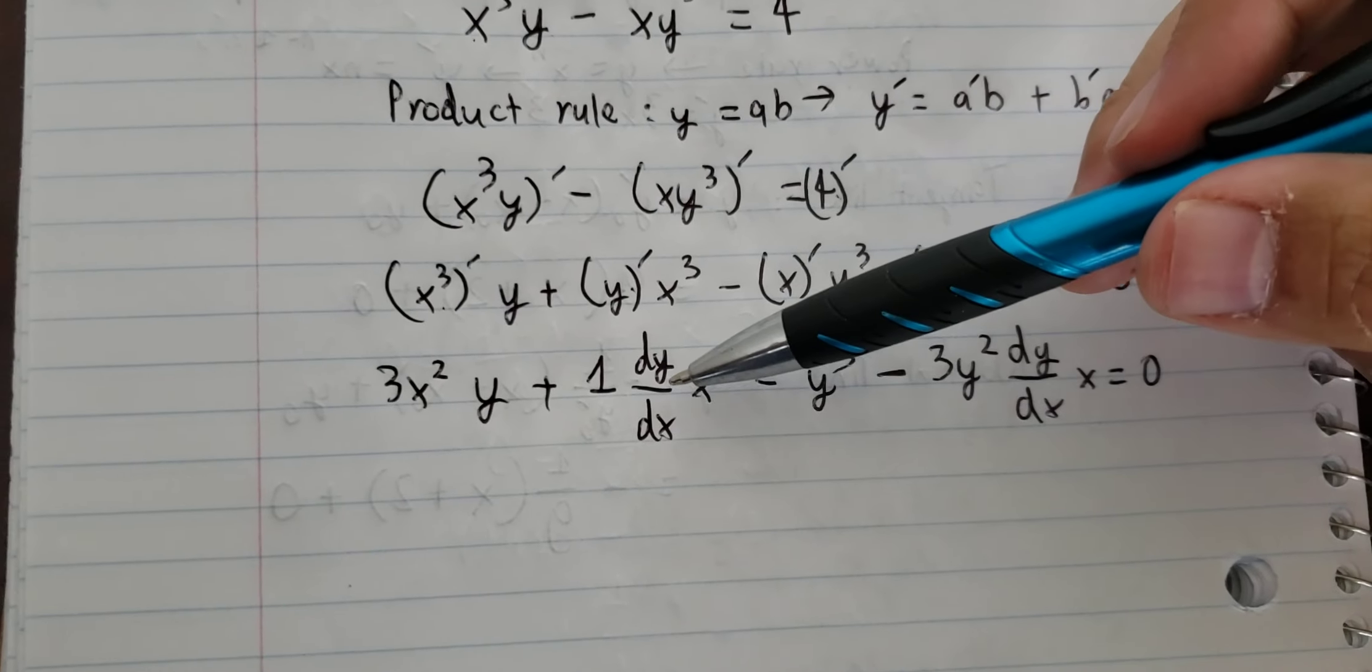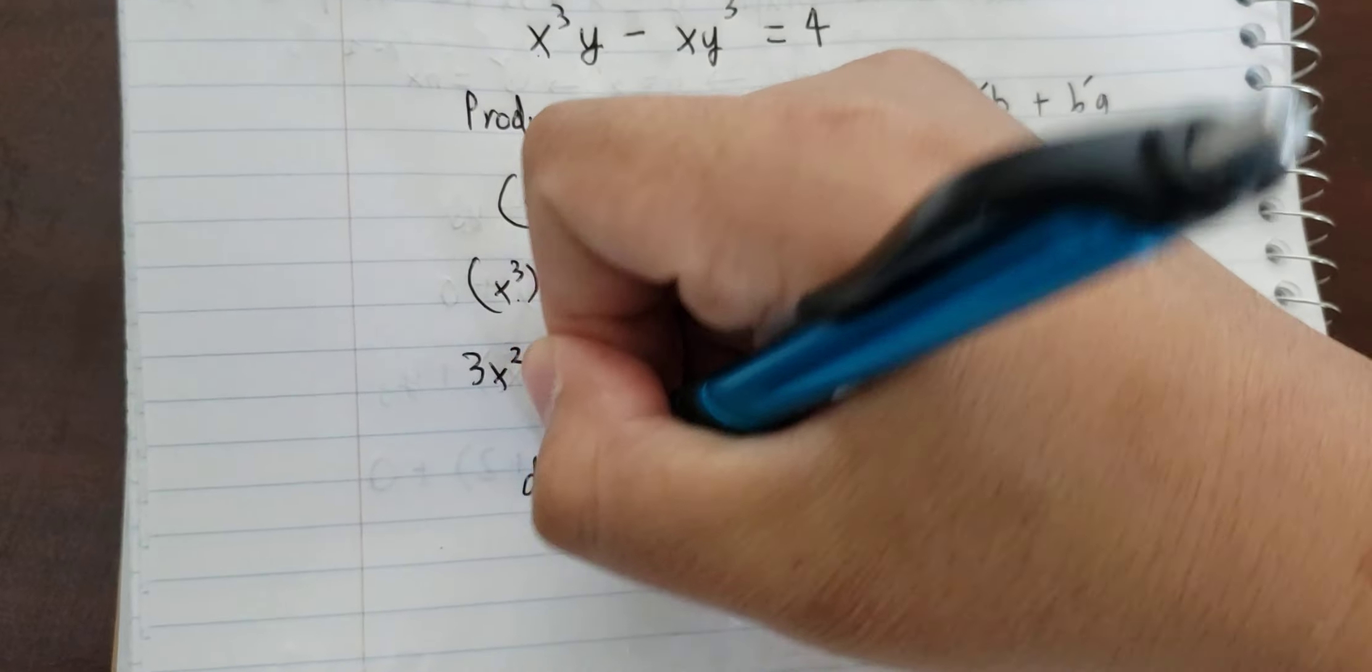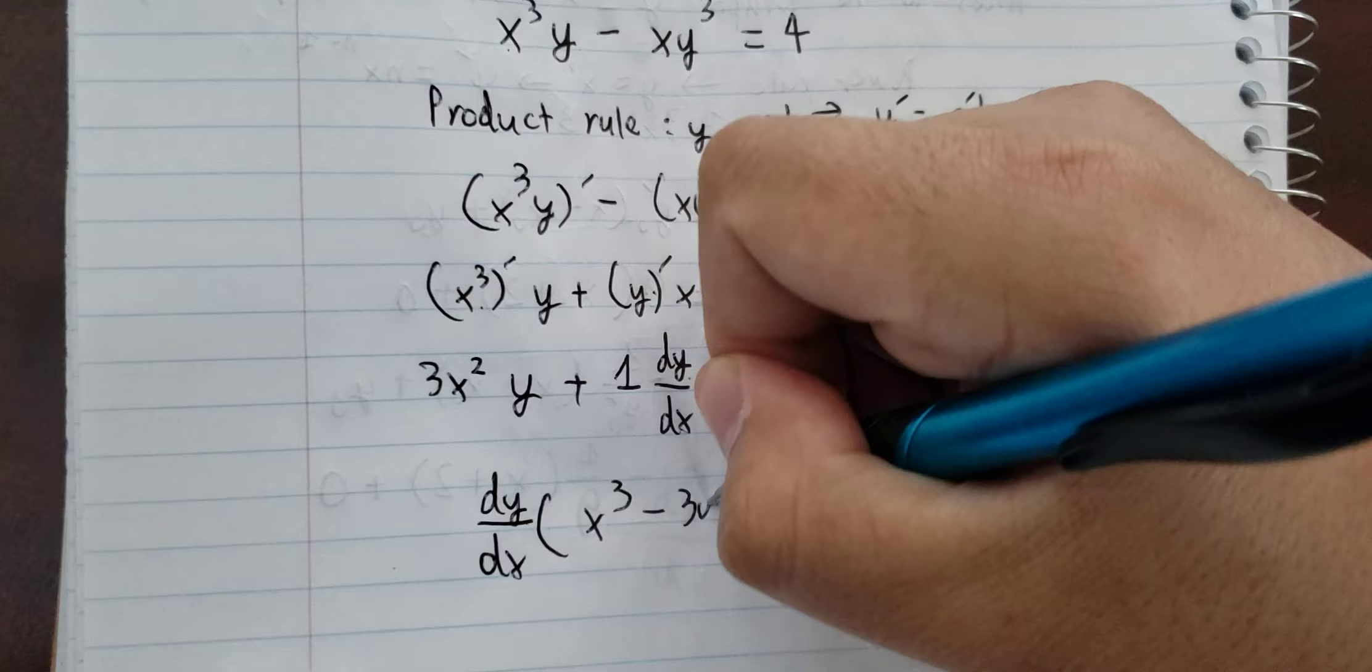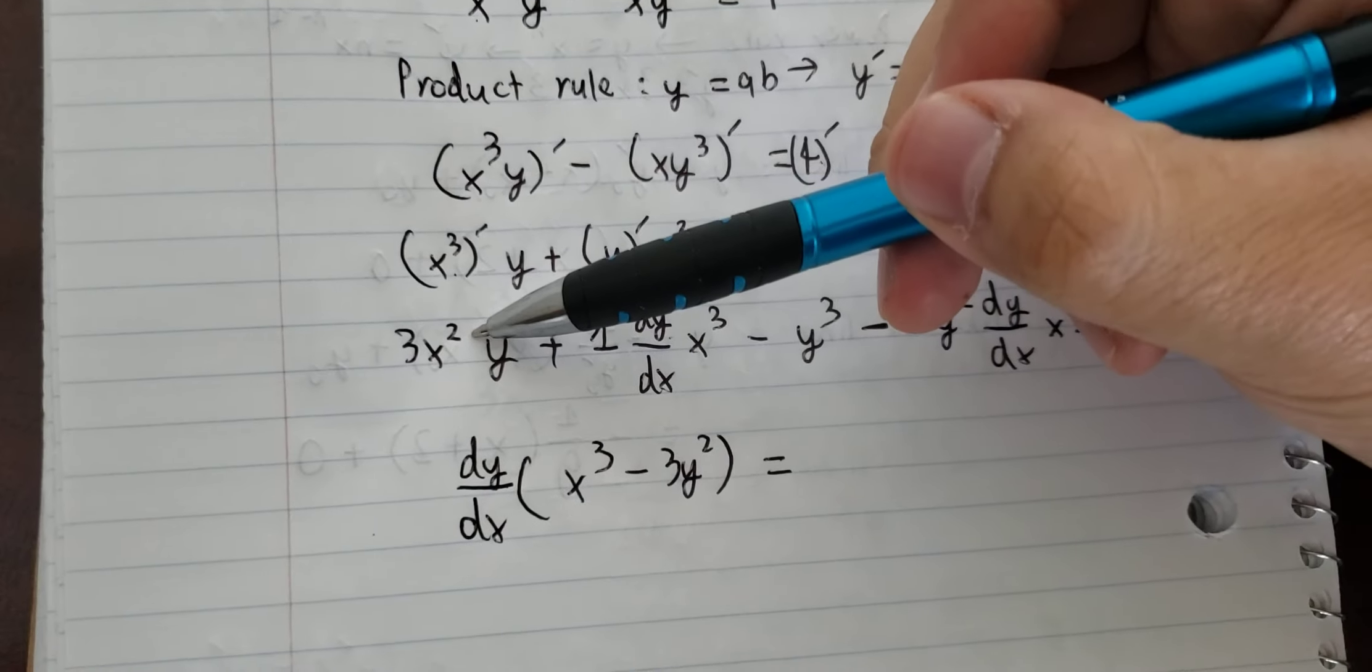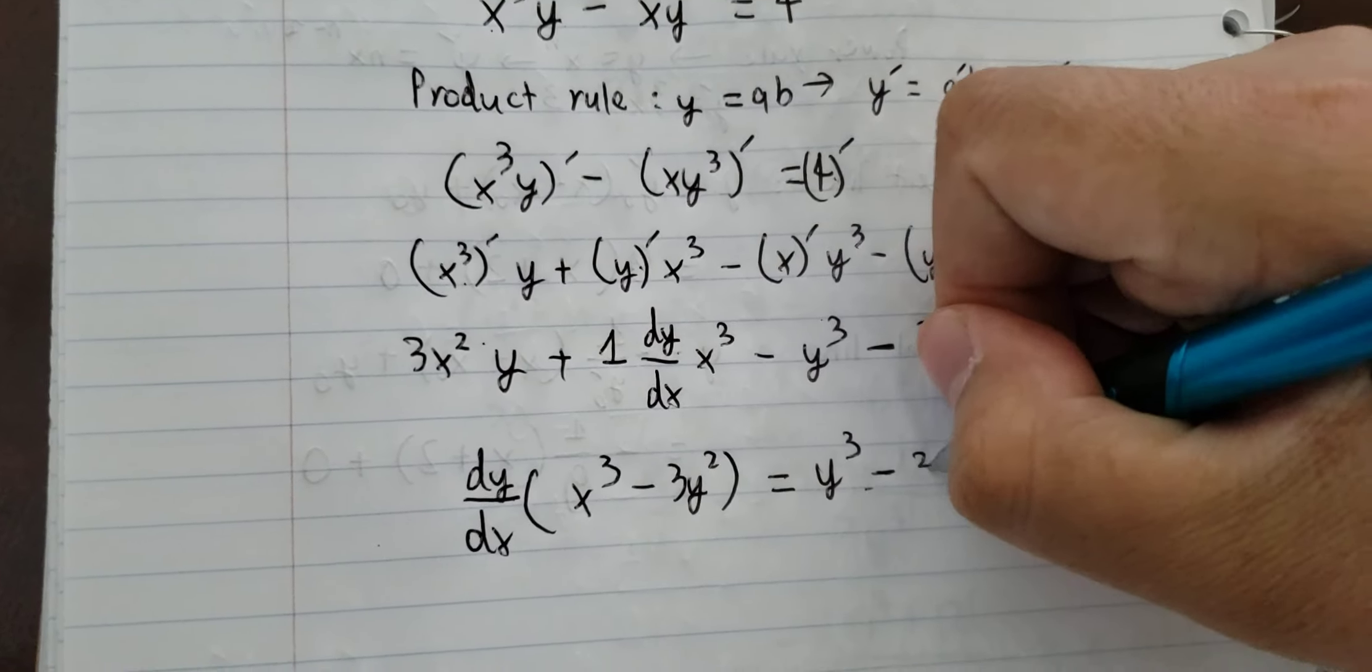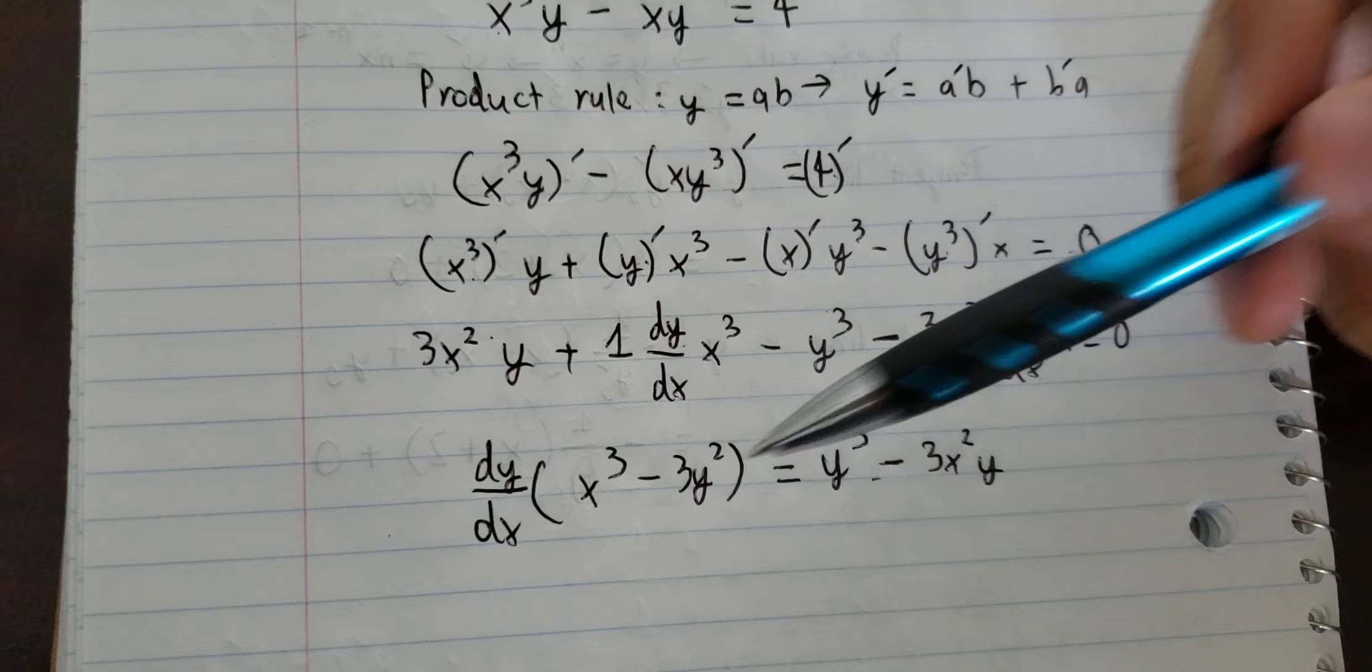Now we can factor out dy over dx. Next, I'll move these terms to the right side. Now we divide both sides by this expression.